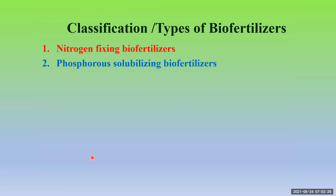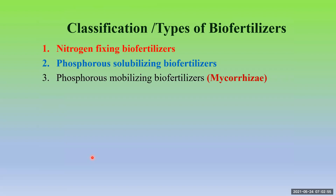Then phosphorus solubilizing — we can say PSBs — phosphate solubilizing biofertilizers. This includes bacteria like Bacillus, Thiobacillus, Pseudomonas, Alcaligenes, Flavobacterium, etc., and phosphorus solubilizing fungi are also there. PSBs include both phosphate solubilizing bacteria as well as fungi like Aspergillus and Penicillium — they can be used as phosphate solubilizing organisms.